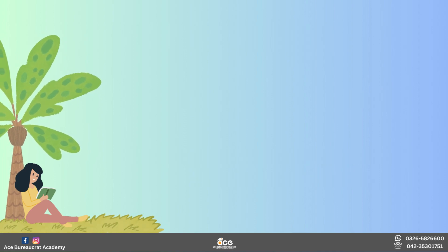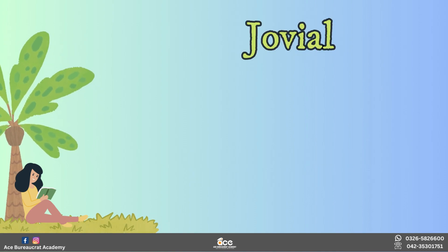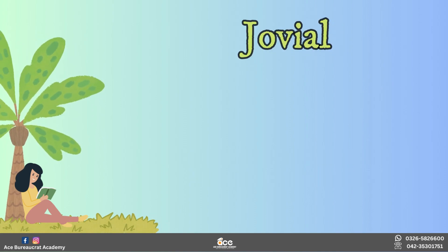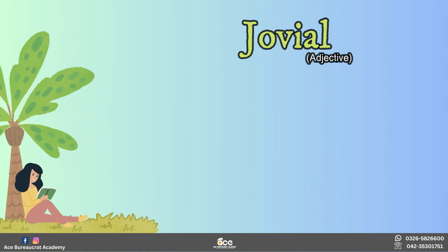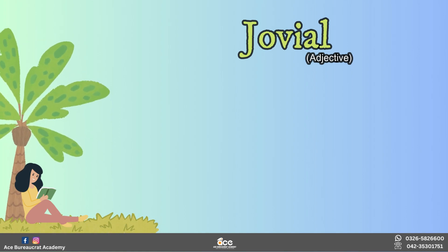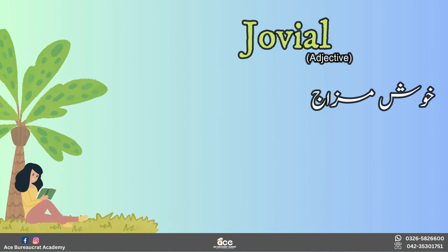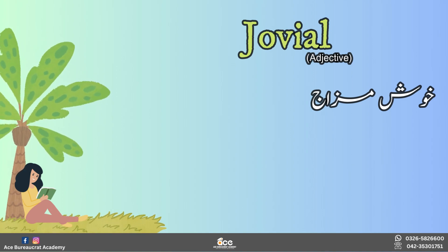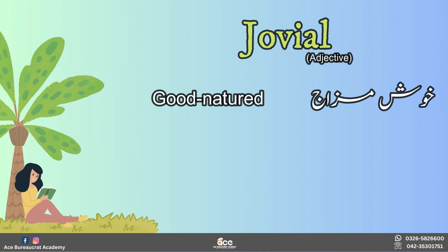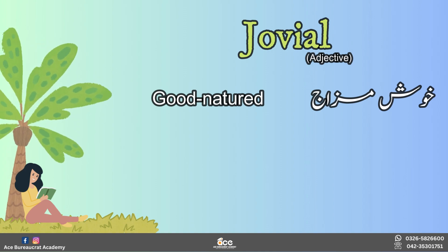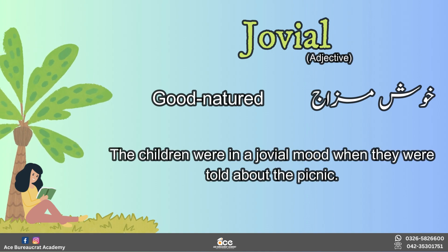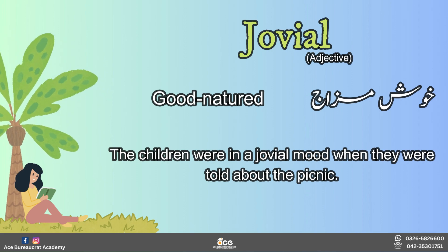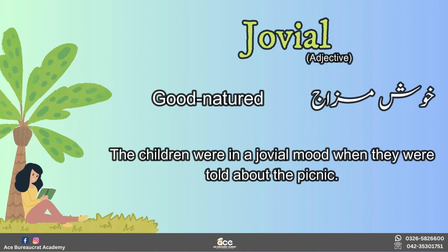Fifth and last word for the day is 'jovial'. ये एक adjective है। इसका उर्दू meaning है 'خوش مزاج'۔ इसका English meaning है 'good natured'. Now let's use this word in a sentence to make it more clear: 'The children were in a jovial mood when they were told about the picnic.'